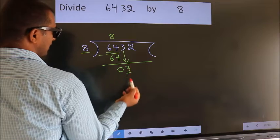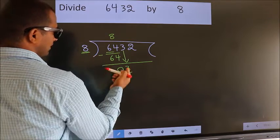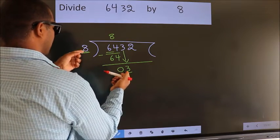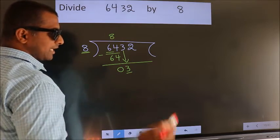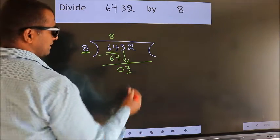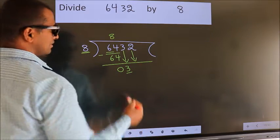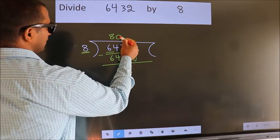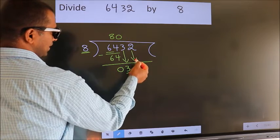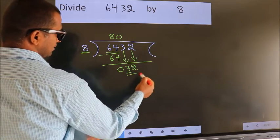Here we have 3, here 8. 3 smaller than 8. So, we should bring down the second number. And the rule to bring down second number is put 0 here. Then only we can bring down this number.